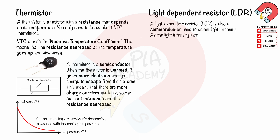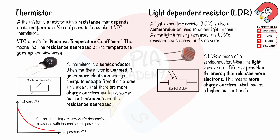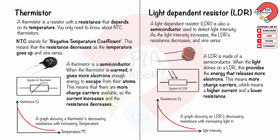A light-dependent resistor, or LDR, is also a semiconductor used to detect light intensity. As light intensity increases, the LDR's resistance decreases. An LDR is made of a semiconductor. When light shines on an LDR, it provides the energy that releases more electrons. This means more charge carriers, which means a higher current and a lower resistance. The graph shows the LDR's resistance plotted against light intensity, showing decreasing resistance with increasing light intensity.